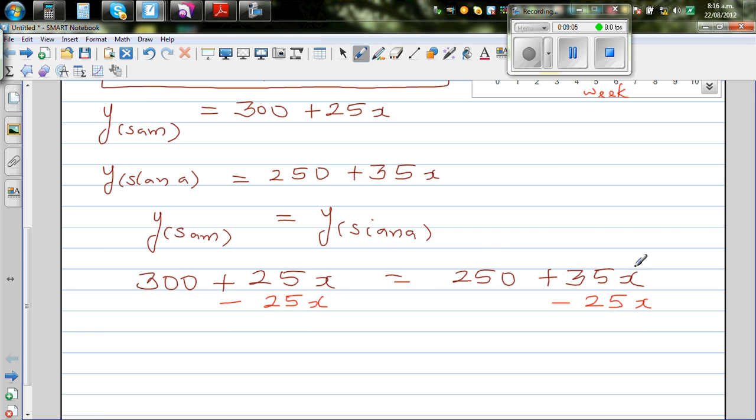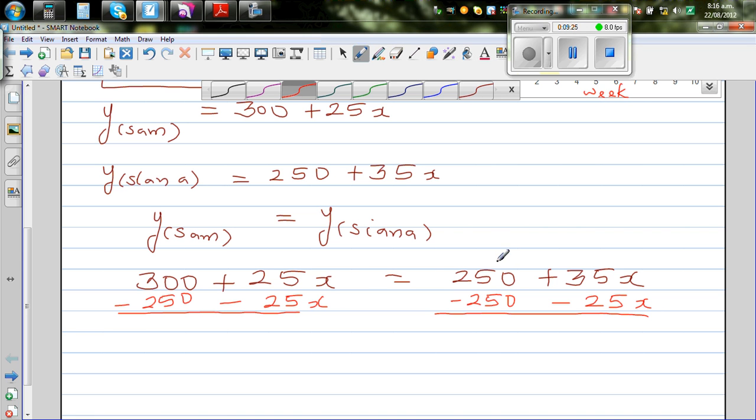I want to bring the x's on the right hand side and the numbers on the left hand side. So I'm going to take away 250 from this side. We have taken away 25x from both sides and 250 from both sides. So 300 minus 250 is 50, is equal to 10x.